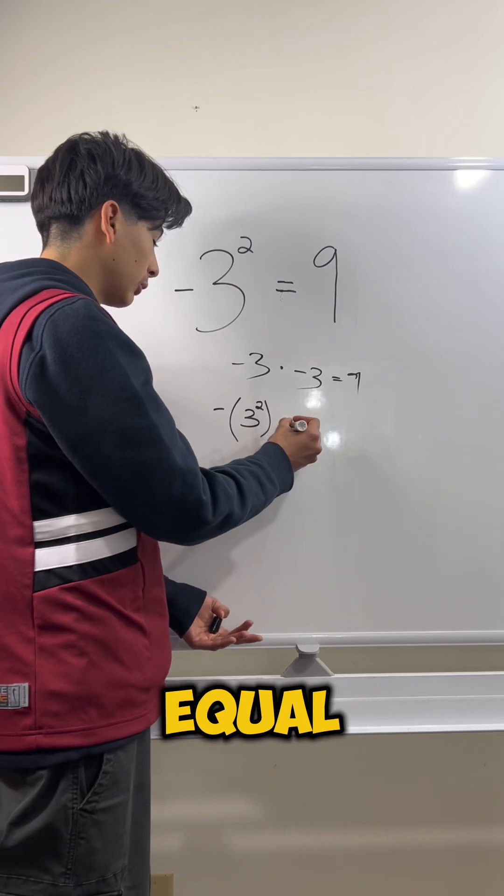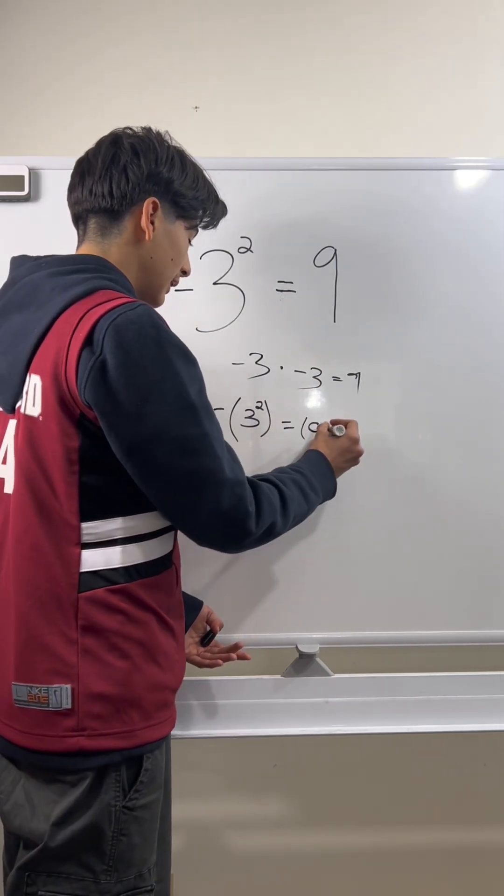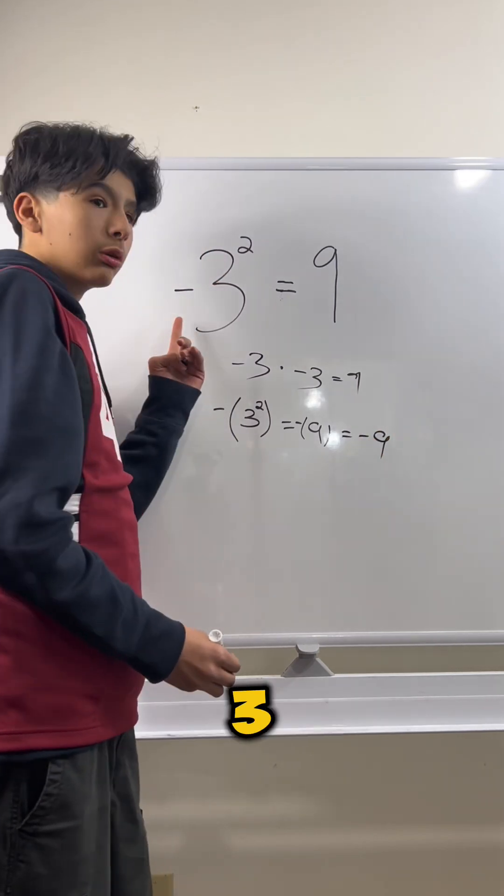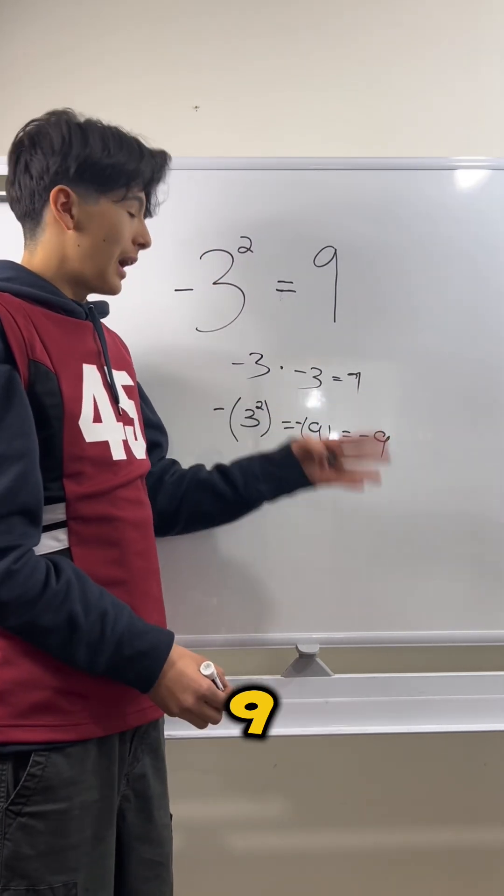Now, what is 3 squared equal to? Well, it's just 9. And what's the negative of 9? Negative 9. So negative 3 squared actually is negative 9.